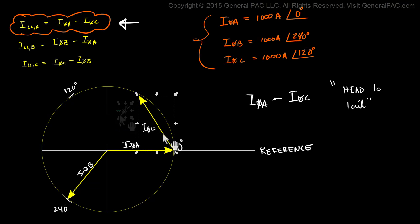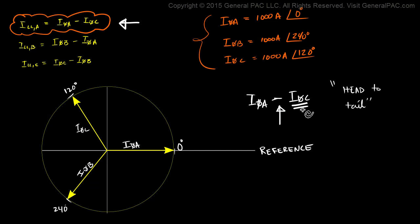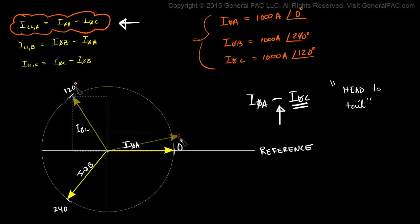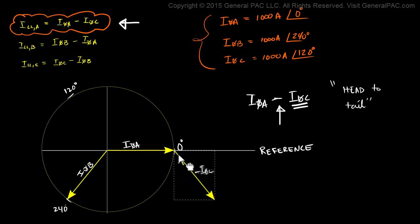Let's clean this up and put phase C current back to where it was. Now because there's a minus sign associated with phase C current, we have to pick up phase C current and rotate it 180 degrees. So phase C current becomes like this — this phasor here is negative phase C current. Now let's pick this up and connect it to the head of phase A current.